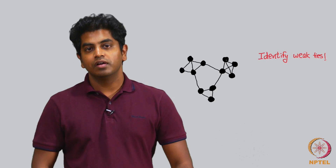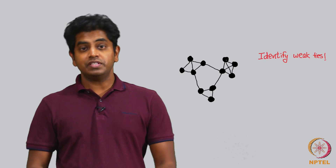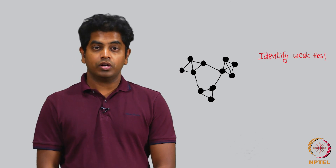Assume I give you a graph G. A graph is basically a bunch of vertices and some edges. I show you such a graph here and I ask you: can you tell me what are the weak ties here? How can you tell me? How do you know what is the intensity of friendship here?